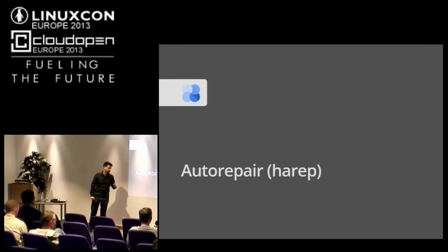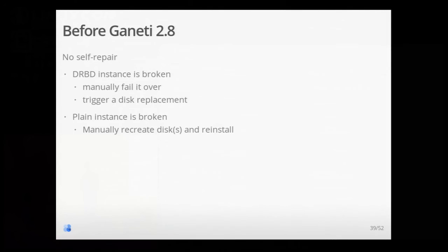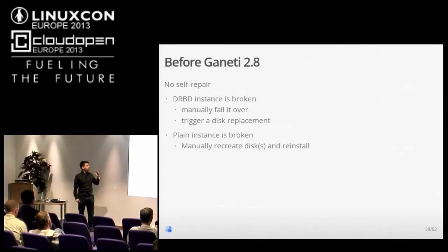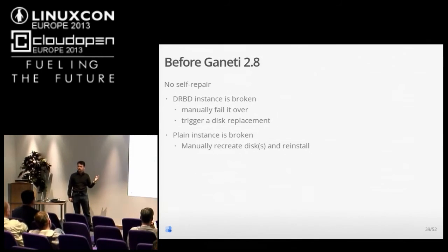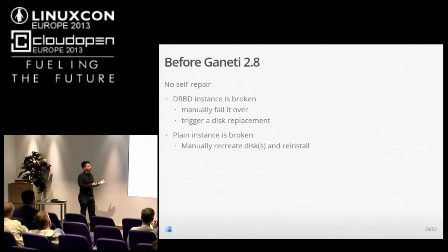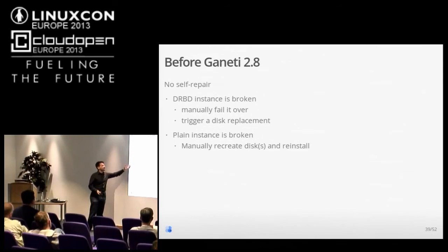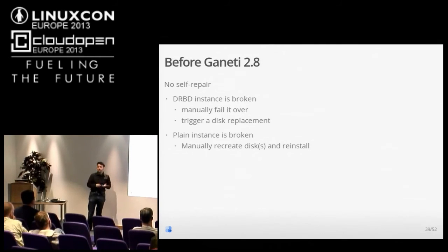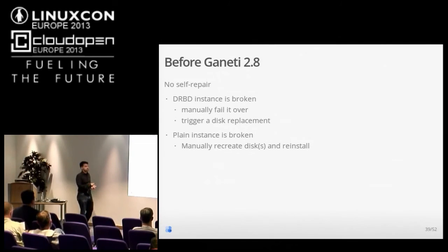Another interesting tool introduced in Ganeti 2.8 is HAREP, our auto repair tool. Before Ganeti 2.8 there was no self-repair — the only automated thing was restarting a crashed instance through the watcher, but self-repair of instances wasn't really possible. For example, if a DRBD of an instance is broken, you would manually have to fail it over, then trigger a disk replacement, and everything would be fine again. Or if a plain instance is broken and the disk is gone, you can only recreate it and reinstall, which is completely manual. Sometimes, especially when you have many instances, you want this automated.